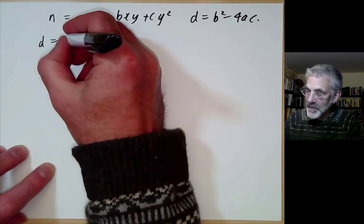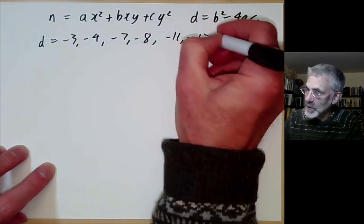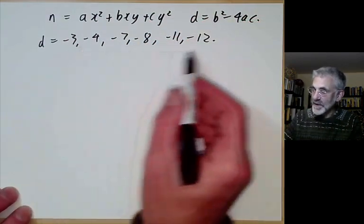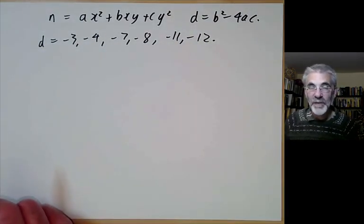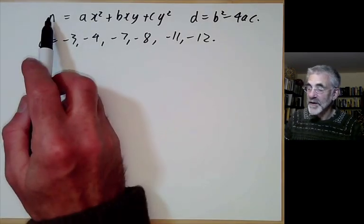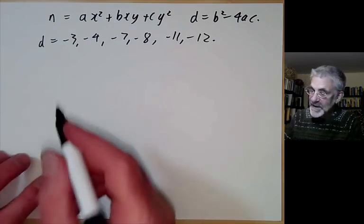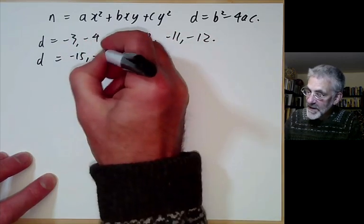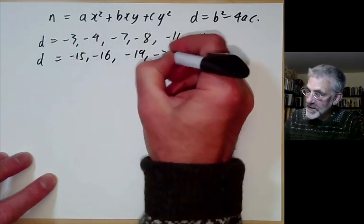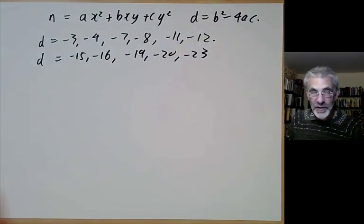Last lecture we looked at discriminants -3, -4, -7, -8, -11 and -12. What we found was that for each of these discriminants, except -12, there was a unique form up to equivalence, and this made it rather easy to determine which primes are represented by the form. This lecture we're going to look at discriminants d = -15, -16, -19, -20 and -23, and we will see that for most of these we start getting extra complications because there's more than one reduced form.